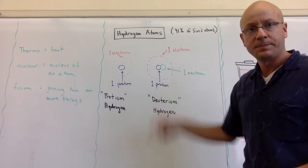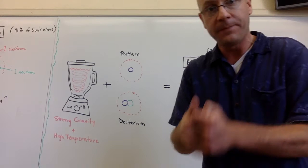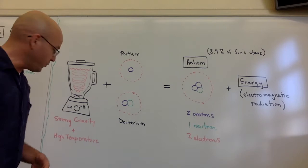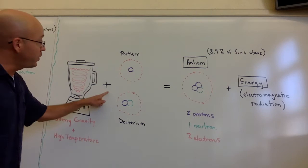Now we're going to move over. So again, this is a simplified version, but I think it could help us understand thermonuclear fusion. Imagine like a blender. You have a blender, which in this case represents the strong gravity, and it represents the high temperature. You get this strong gravity, you get the high temperature, plus a protium atom and a deuterium atom.